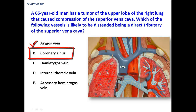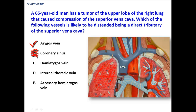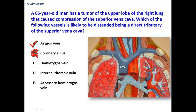The coronary sinus is the main vein that drains the heart, and it opens into the right atrium, and not into the superior vena cava, so it will not be affected. The hemi-azygous vein is located on the left side. The vein crosses the midline, and it drains into the azygous vein, and it is the azygous vein that drains into the superior vena cava.